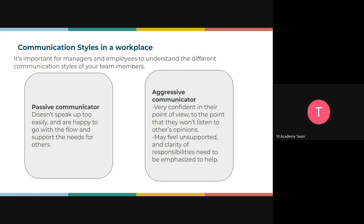If you recognize that a team member is a passive communicator and you really want their idea on a project, you have to call them out to hear their opinion — encourage them to speak up, because they will never raise their hand on their own. The aggressive communicator is overly confident, feeling their opinion matters most. They are always interjecting with their opinion, wanting to be heard over everyone else. If their feedback is challenged, they feel attacked and keep hitting on their own points — usually closed-minded.